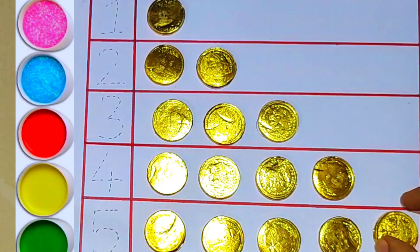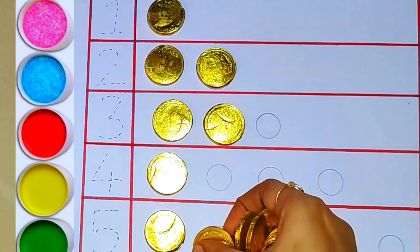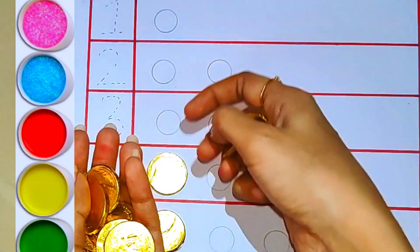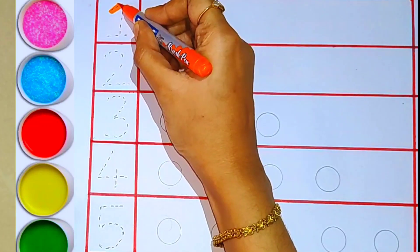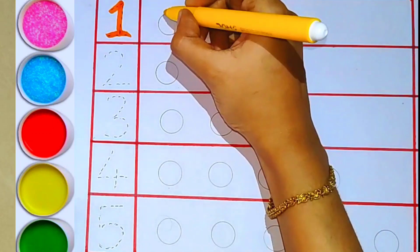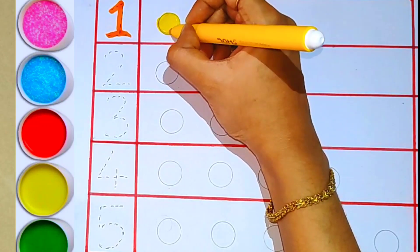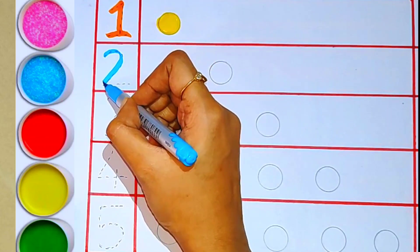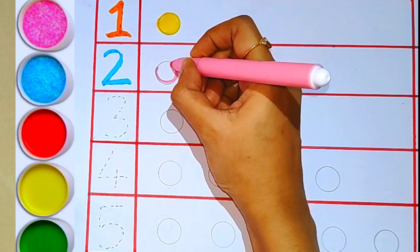Let's remove all the coins and start from the beginning. First, number one, yellow color, one ball.